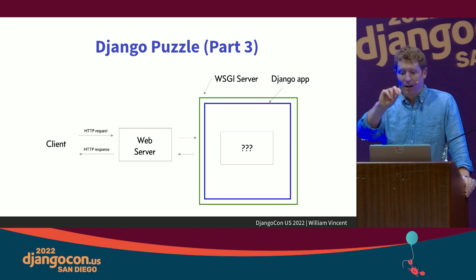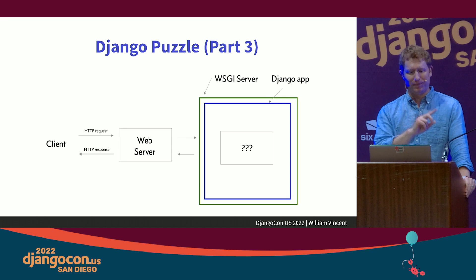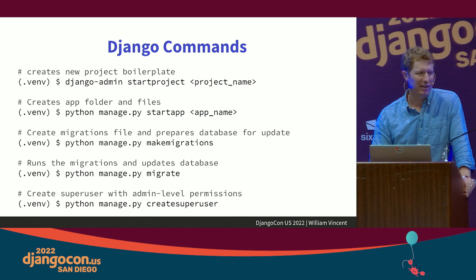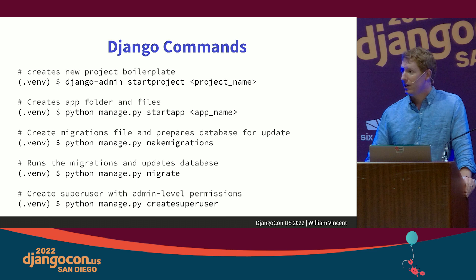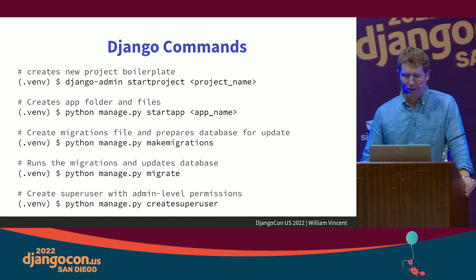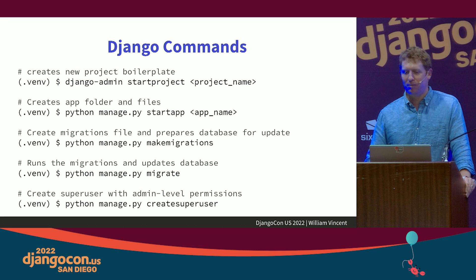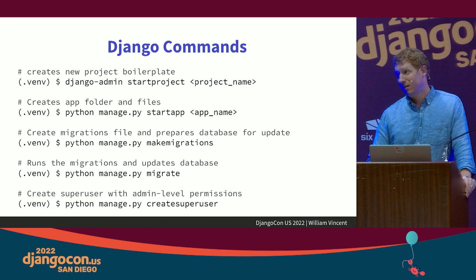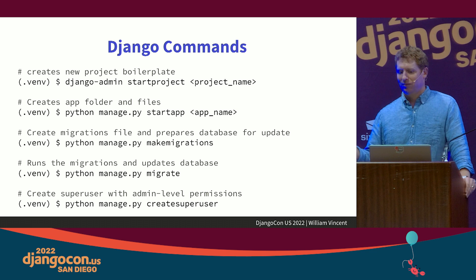So now the diagram looks like: client → web server → WSGI server → Django app, and back. Django commands: the five you'll use 90% of the time are `startproject`, `startapp`, `makemigrations`, `migrate`, and `createsuperuser`. The difference between `django-admin` and `python manage.py` is that `manage.py` looks to your settings file and loads in extra goodies — that was confusing to me for many years.